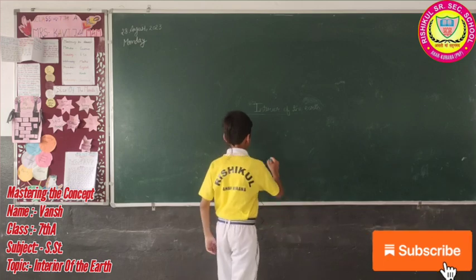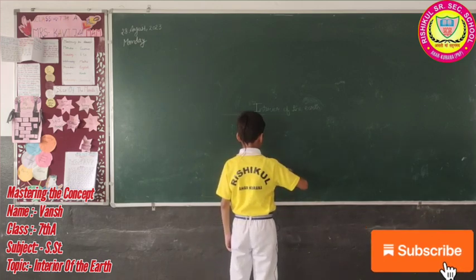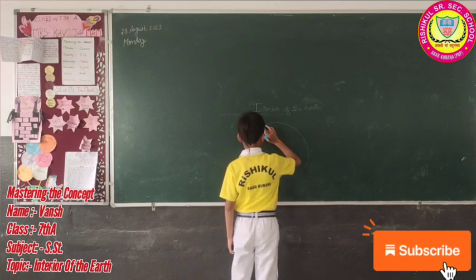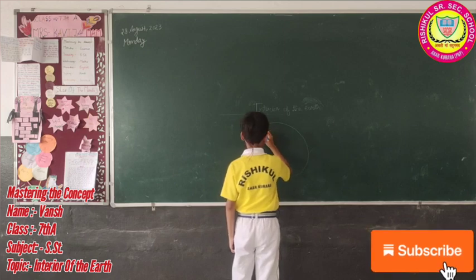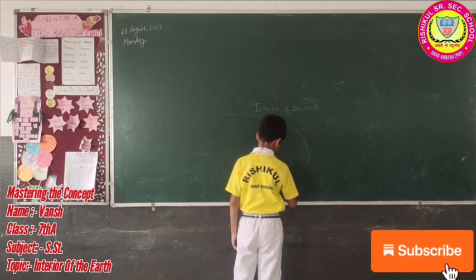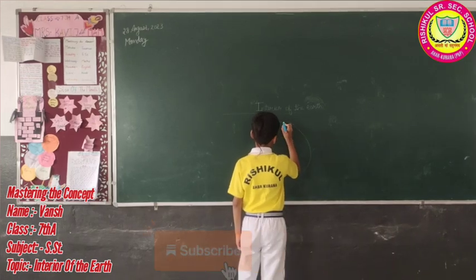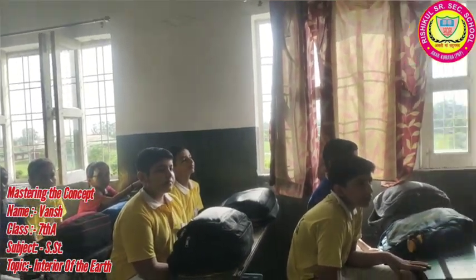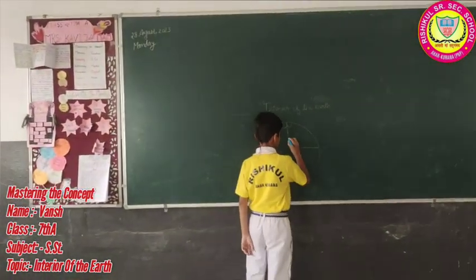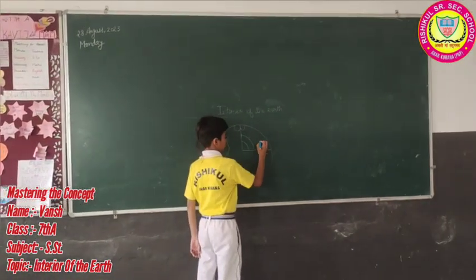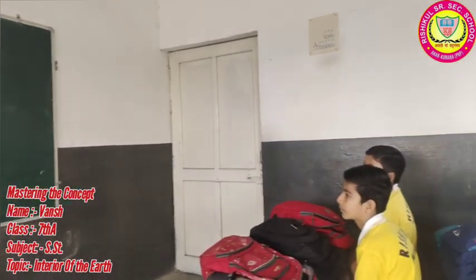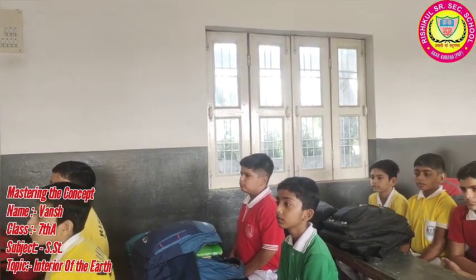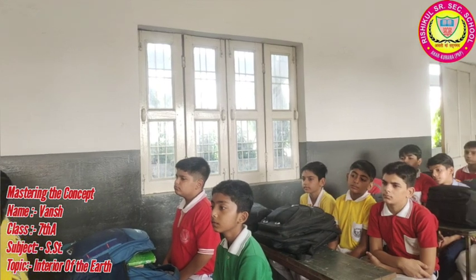Firstly, we draw our earth. Our earth is divided into three layers. The first is the crust, the second is the mantle, and the third is the core.